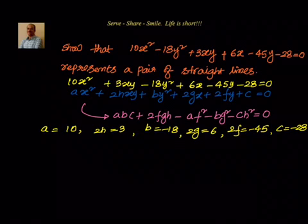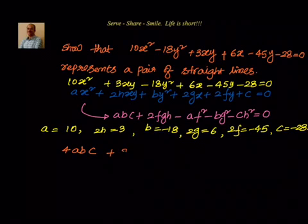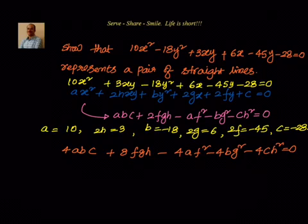Now we can substitute into the condition. I will multiply the whole condition by 4 — it makes no difference since the right-hand side is 0. So the condition becomes: 4ABC plus 8fgh minus 4Af² minus 4Bg² minus 4Ch² equal to 0. The reason for doing this is ease of calculation: since we have 2g, 2f, and 2h, multiplying gives 8fgh directly, avoiding fractions when finding individual f, g, h values.